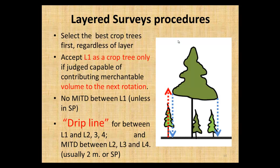We're recommending the drip line concept for the next layers - layer two, three, and four - in relationship to layer one. Basically, if this is a layer one tree on the right, and the pith of the regen underneath is outside of the crown, then that's acceptable. If you had a two-meter intertree distance and it was two meters here then that tree would not count unless it was outside of the drip line. Between layers two, three, and four among themselves, your minimum intertree distance would apply - usually two meters or whatever is in your silviculture prescription.